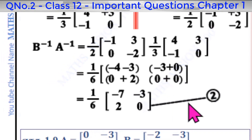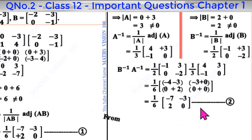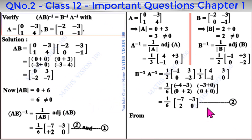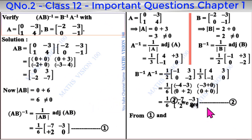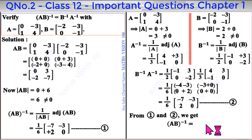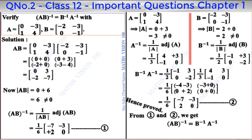So B inverse A inverse equals 1 by 6 into [[-7, -3], [2, 0]], which equals AB whole inverse. Therefore we get AB whole inverse equal to B inverse A inverse. Hence proved.